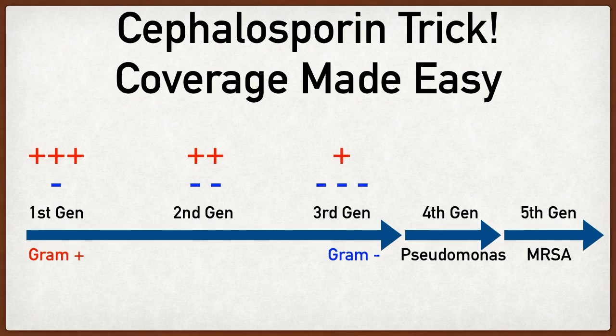Continuing to third generation cephalosporins — the gram positive coverage isn't quite as good as the first generation, but the gram negative coverage is much better. Now we're covering for things like Neisseria, Bacteroides, Serratia, and Enterobacter, just to name a few. So on the spectrum, we started with really good gram positive coverage and ended with okay coverage, while gram negative went from okay to really good.